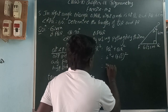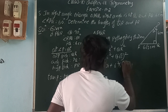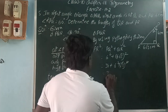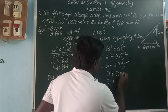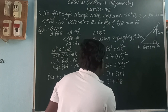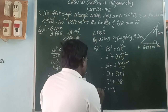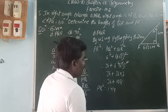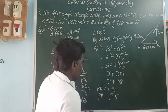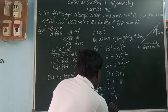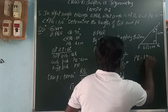6 squared is 36, plus 6 root 3 whole squared is 6 squared into root 3 squared, which is 36 into 3 equals 108. So PR squared equals 36 plus 108 equals 144. Therefore PR equals square root of 144, and since 144 is 12 squared, PR equals 12 centimeters.